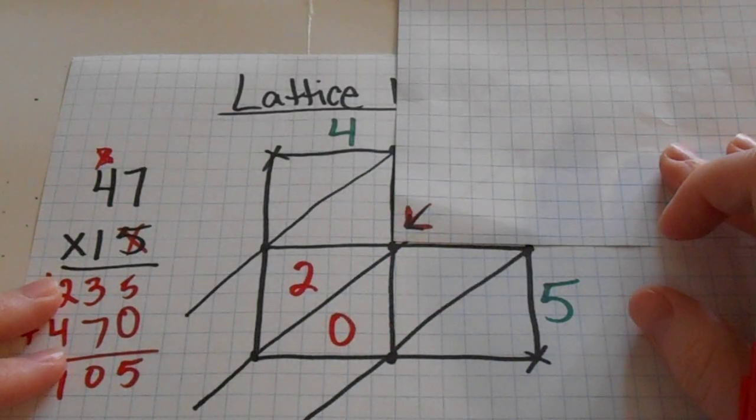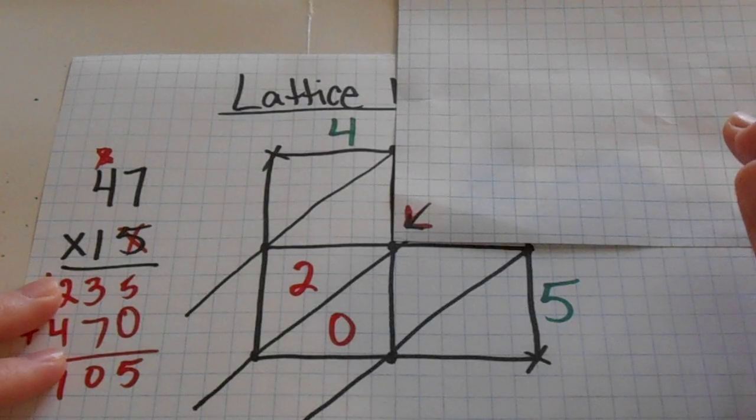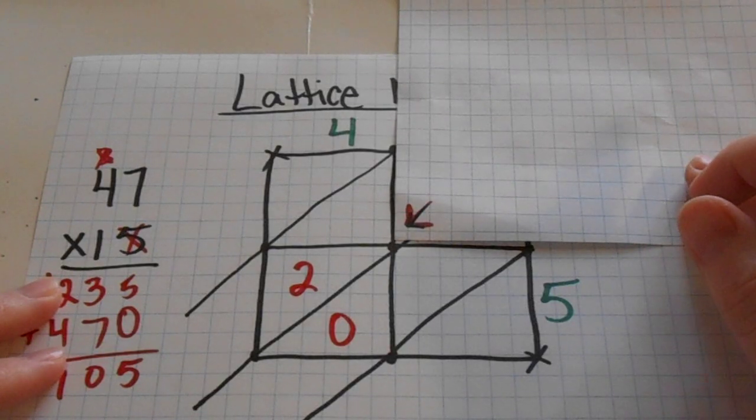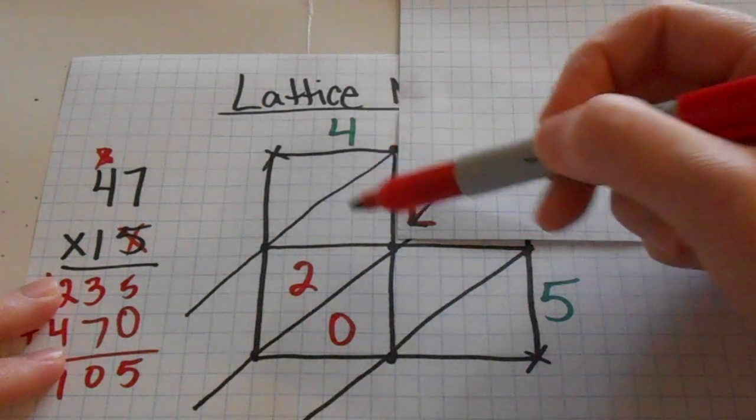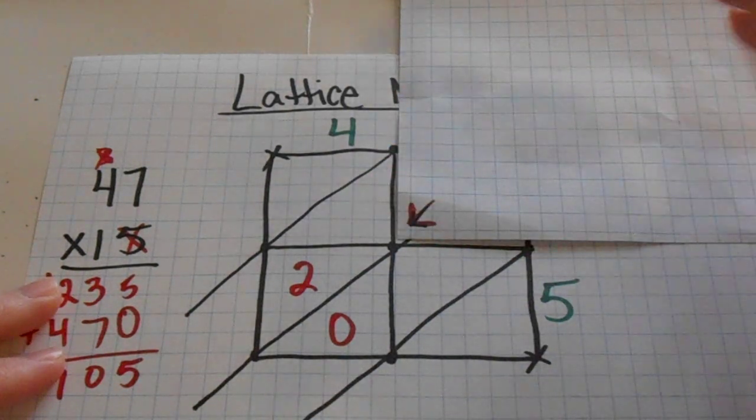Another great thing about lattice multiplication is you can start in any box you want. You don't have to do it in any specific order. I like to start with this box because I just start with these 2 numbers and then it's less confusing.